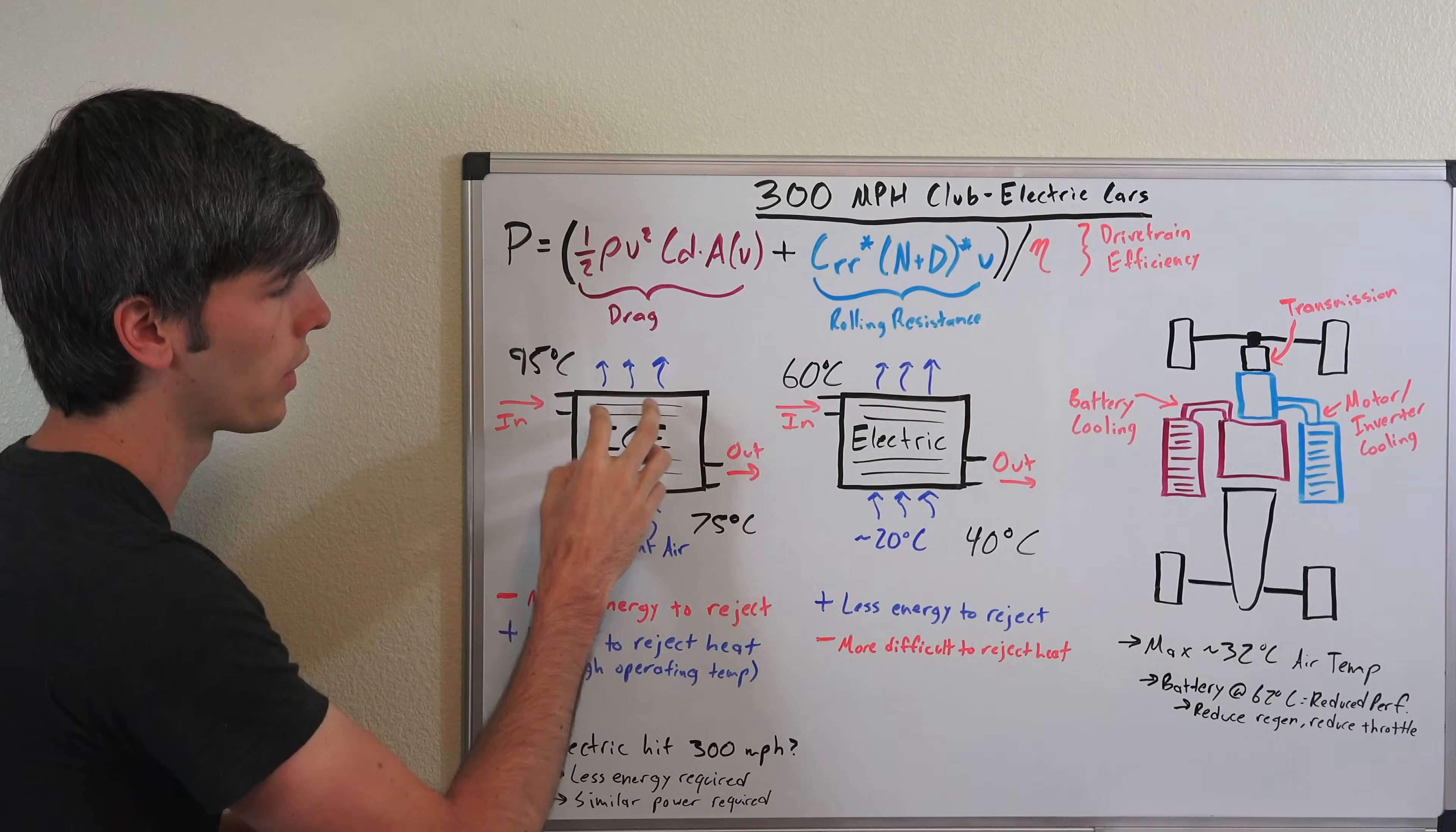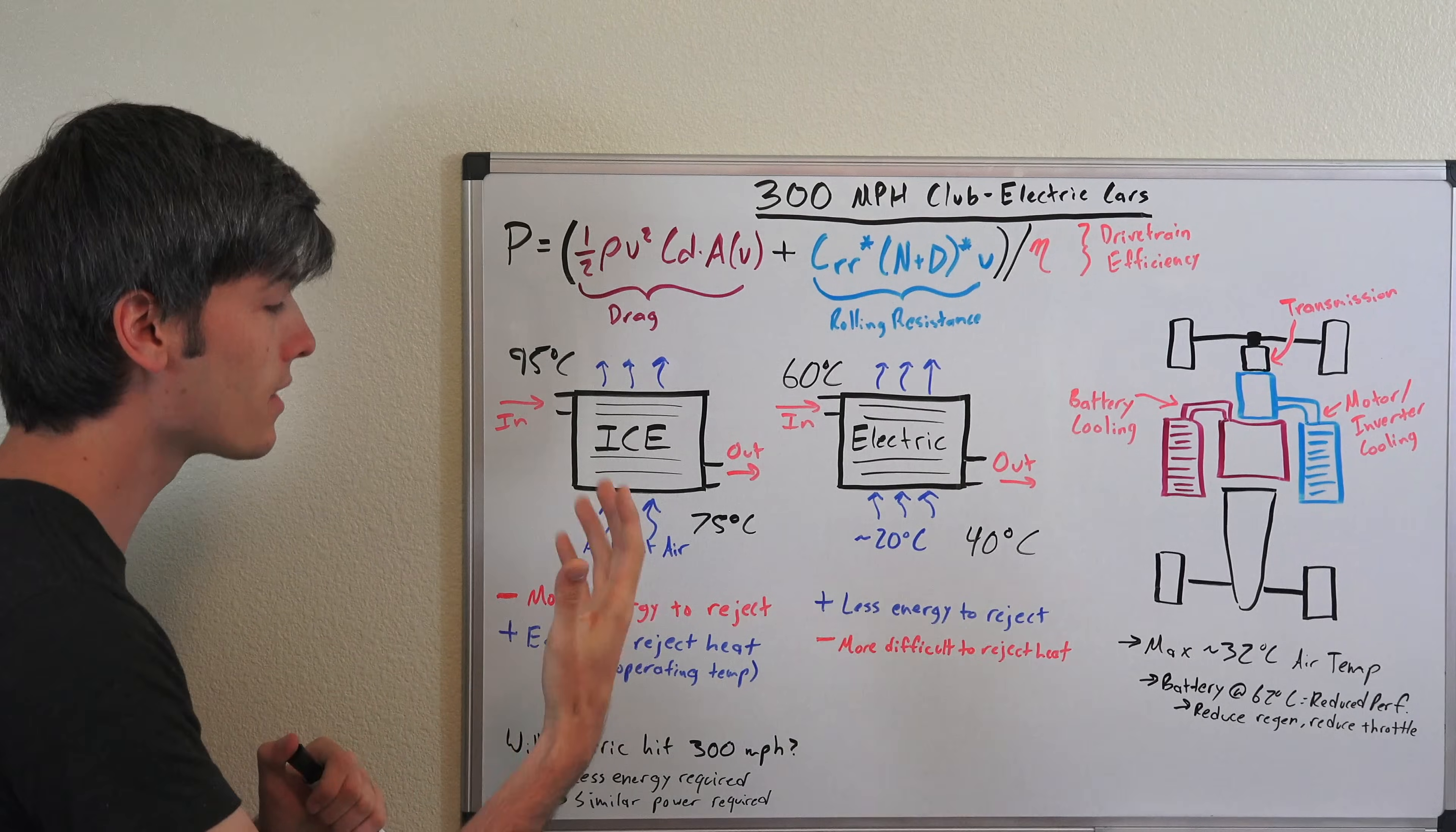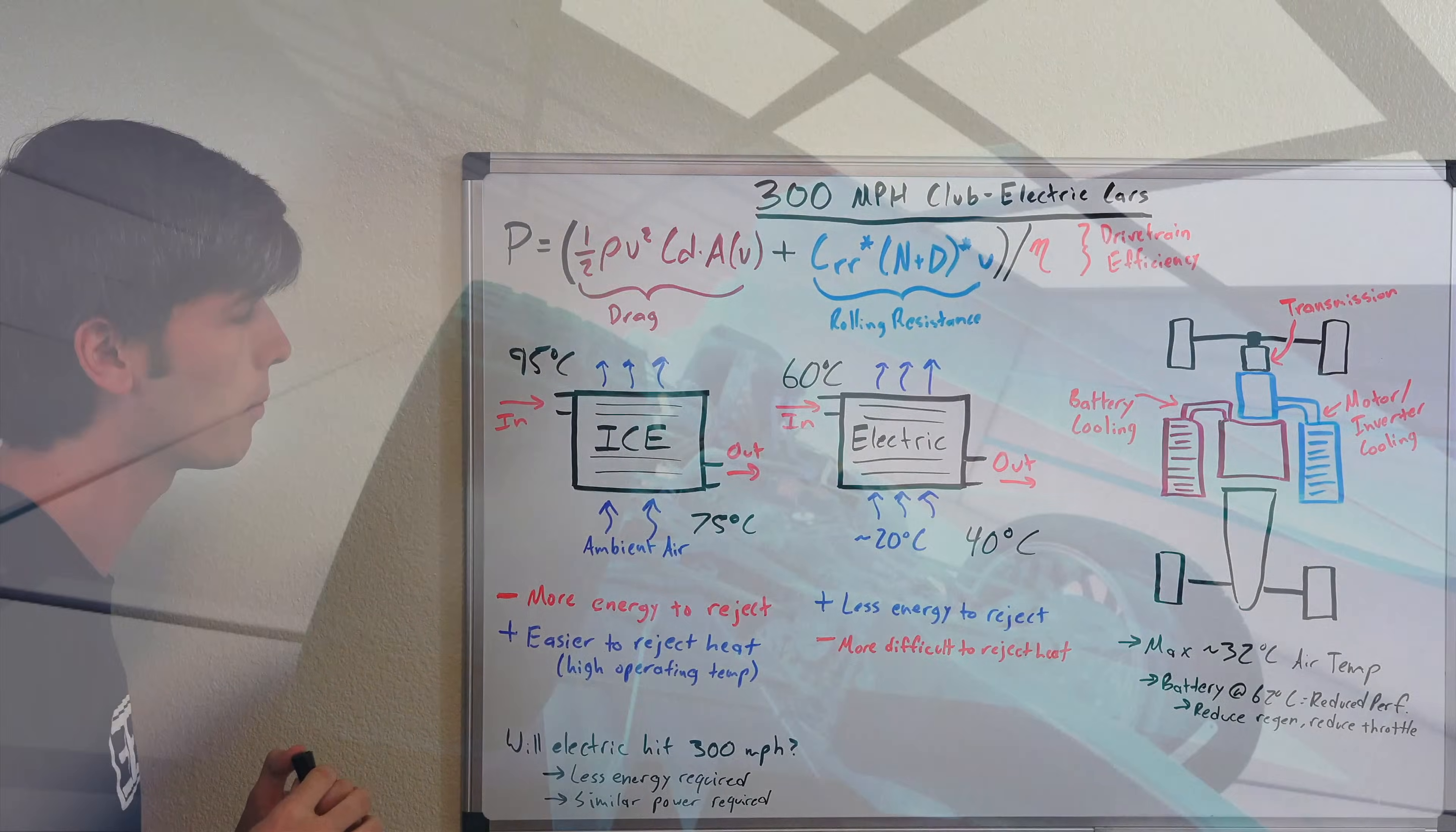So this is going to reject a lot more heat. This isn't going to reject as much heat. And these kind of play to balance out because the internal combustion engine needs to reject more heat, it's far more inefficient, so it has a lot more heat to reject, but it's better at rejecting that heat because it operates at a higher temperature.